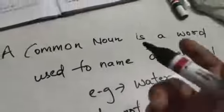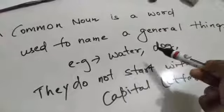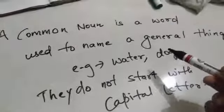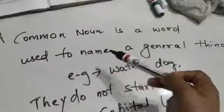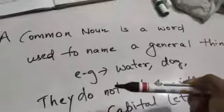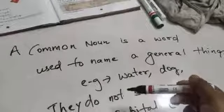For example: girl — girl is applicable to all girls; boy is applicable to all boys, to the whole category of boys. That is called common noun. A common noun is a word used to name a general thing. Examples: water, dog, cat, animal, bird, sofa, room, bed. They do not start with a capital letter. The common noun does not start with a capital letter. All the words you have filled are naming words and all are common nouns.